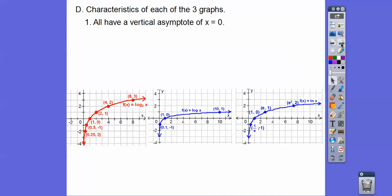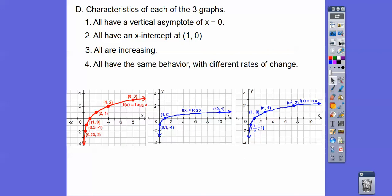Here's the characteristics of all these graphs. They all have a vertical asymptote at x = 0 right there. So they all have an x-intercept at (1, 0). They all are increasing. So as we go from left to right, they're all increasing. And they all have the same behavior, just different rates of change. That just means one's increasing more than the other ones. The red guy's increasing the most. The middle guy's increasing the least. And this guy's increasing the middley.